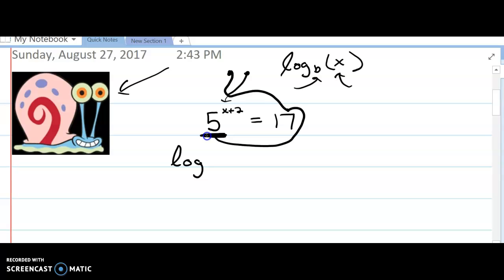So we started here with 5, so we keep the base as the 5. We go log of 5. And we move on to this 17. The next part in our log is our argument or our input, so we put 17 there. And then we set it equal to whatever our last thing is, which was x plus 2. We finish here.